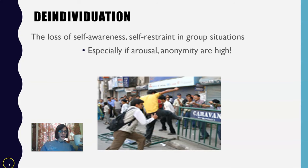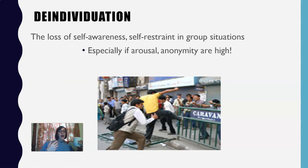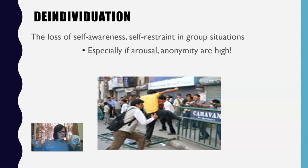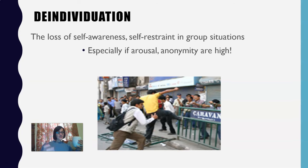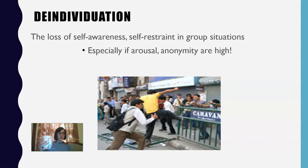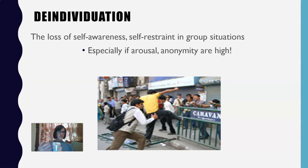One thing that can counteract de-individuation is making people aware of themselves. Researchers have tested this with kids and Halloween candy, and it's also used to discourage shoplifting — by placing mirrors. Human beings have a tendency to look at themselves in mirrors, and that highlights self-awareness, giving you your sense of self back. Making you aware of yourself makes you less likely to fall prey to de-individuation. Kids reminded of themselves by a mirror won't take the whole bowl of Halloween candy, and shoplifters are less likely to steal when mirrors are present.